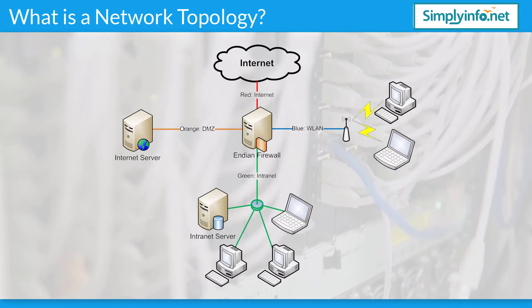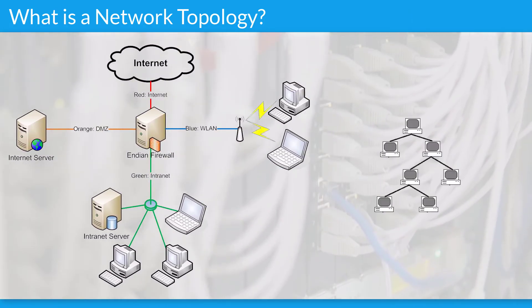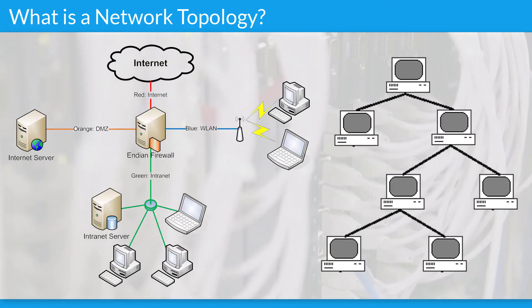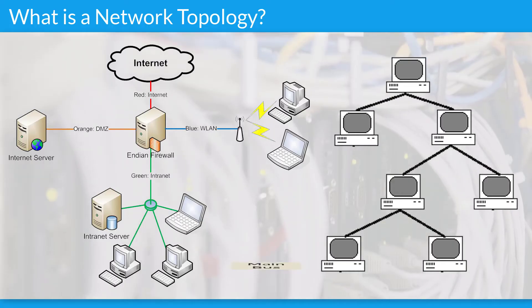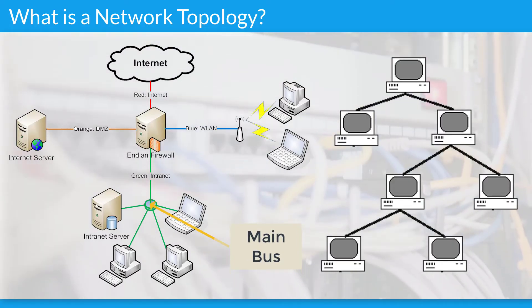Tree Network Topology: The tree network topology uses two or more star networks connected to each other. The central computers of the star networks are connected to a main bus. Thus a tree network is a bus network of star networks.